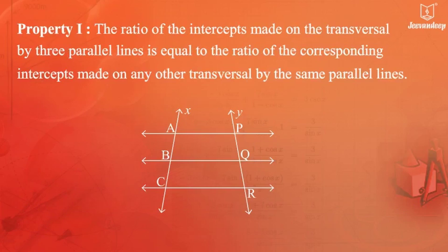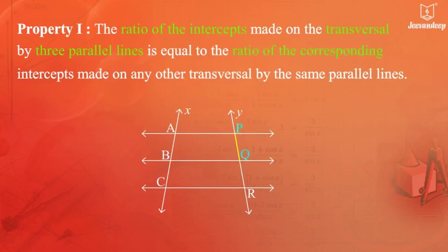The ratio of the intercepts made on the transversal by three parallel lines is equal to the ratio of the corresponding intercepts made on any other transversal by the same parallel lines.